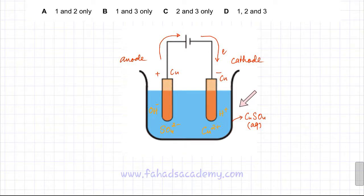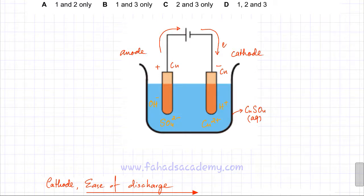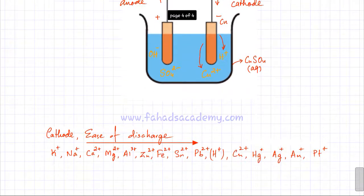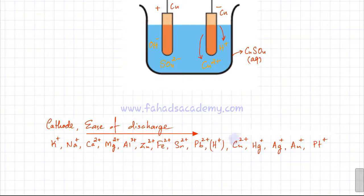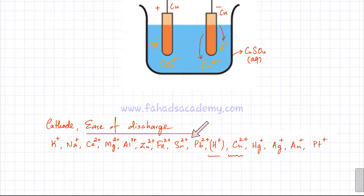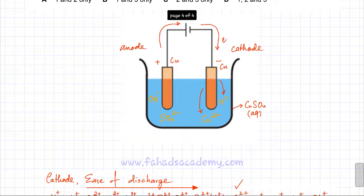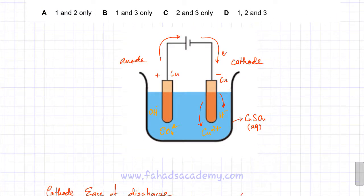At the cathode, the least reactive of the two competing ions — hydrogen and copper — will be discharged. Referring to the reactivity series, there is a competition between Cu²⁺ and H⁺. The ease of discharge increases toward the less reactive end, and Cu²⁺ is less reactive than H⁺. So Cu²⁺ ions gain two electrons at the cathode to form copper metal.